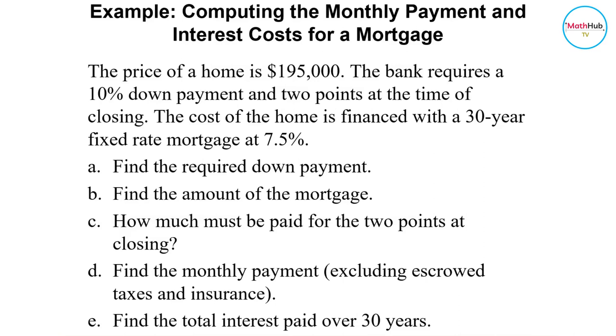Find the required down payment. Find the amount of the mortgage. How much must be paid for the two points at closing? Find the monthly payment excluding escrowed taxes and insurance. And find the total interest paid over 30 years.